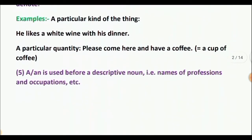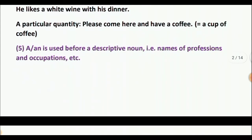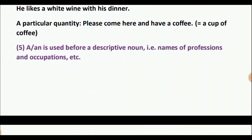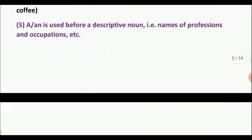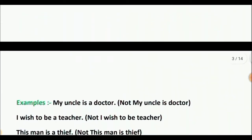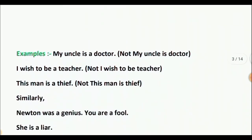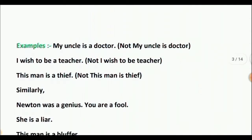Rule 5: A or AN is used before a descriptive noun — that is, names of professions and occupations, etc. Example: 'My uncle is a doctor.' Not 'my uncle is doctor.' Here, doctor is a profession, so A is used before it. 'I wish to be a teacher.' Not 'I wish to be teacher.' 'This man is a thief.' Similarly, 'Newton was a genius,' 'You are a fool,' 'She is a liar.'